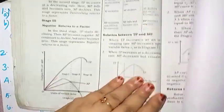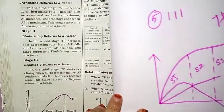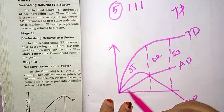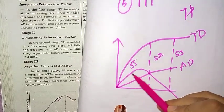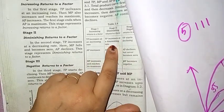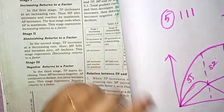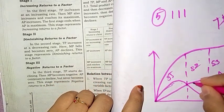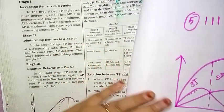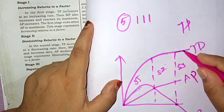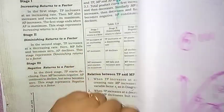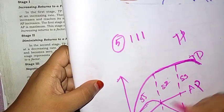In the first stage, TP increases at an increasing rate. MB increases and reaches its maximum level. In the second stage, TP increases at a diminishing rate. AP starts to decline. MB becomes zero. In the third stage, TP declines, AP continues to decline, and MB becomes negative.